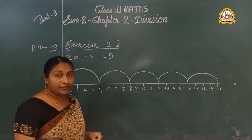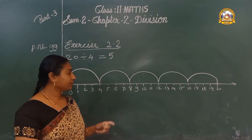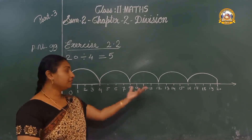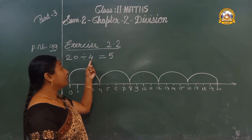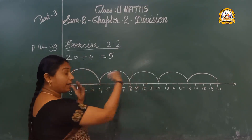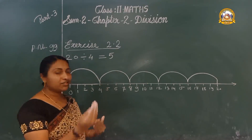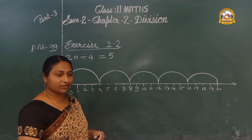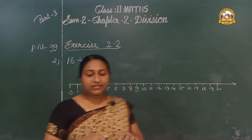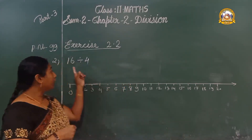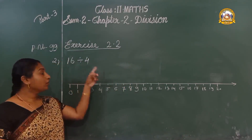Did you get it? Very easy — just go backwards. Okay children, let us do the next one: 16 divided by 4.